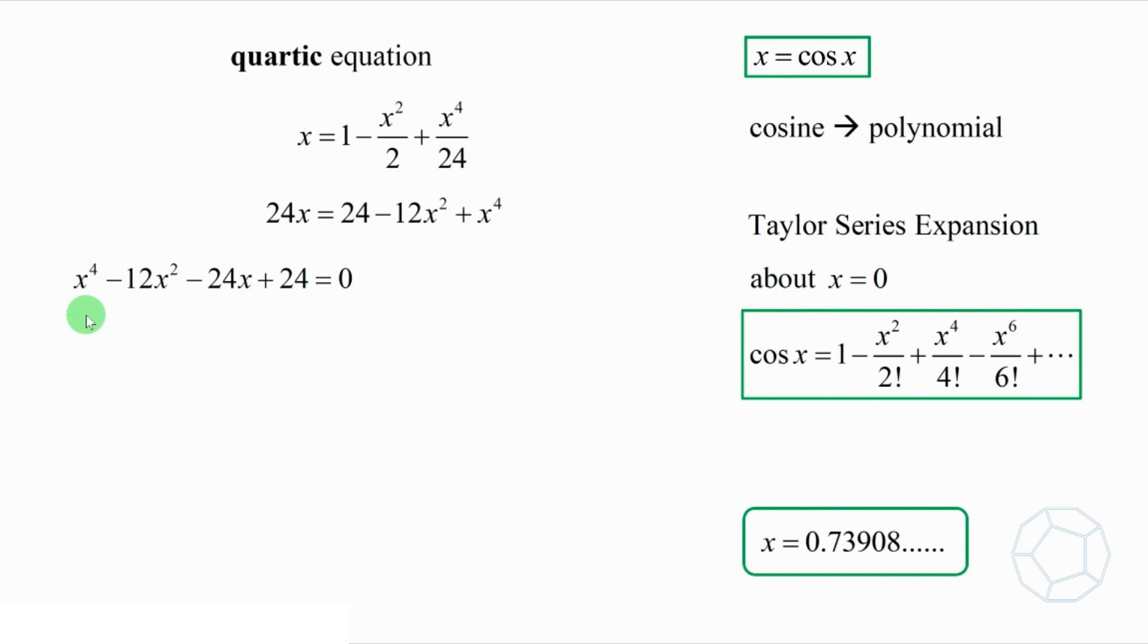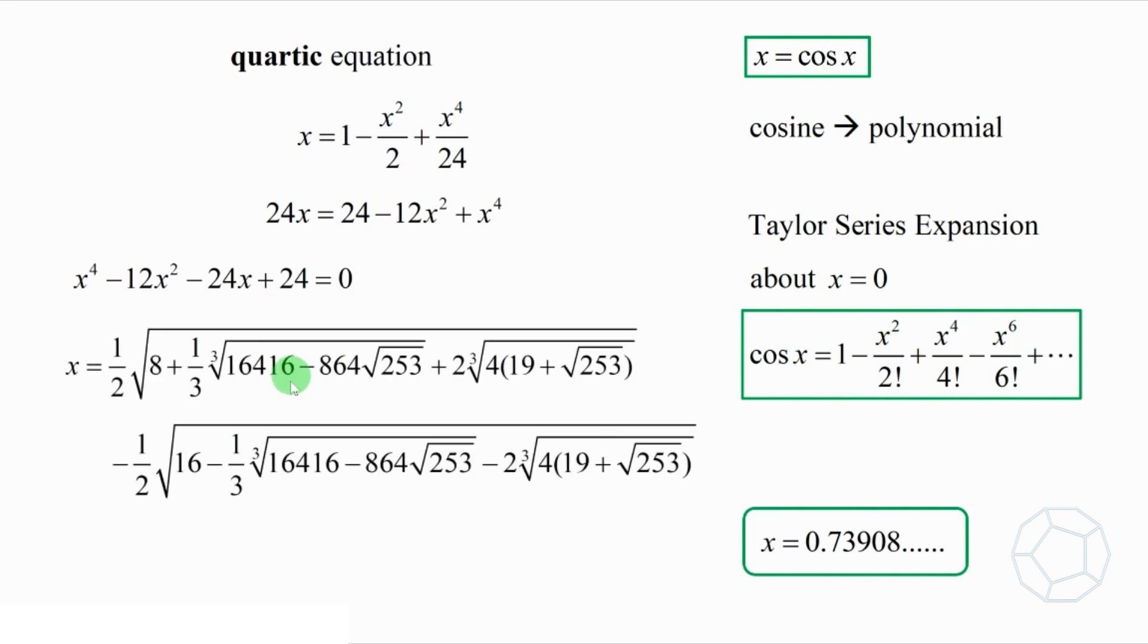Again, it cannot be factorized, but don't worry, there's a general formula to solve the quartic equation. The solution is the following, which is approximately 0.739021.